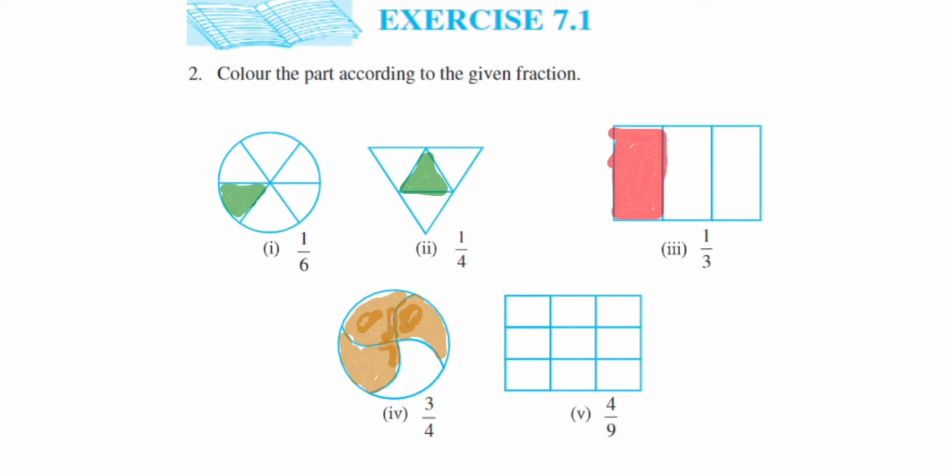Okay, the next one, last one: 4 upon 9. So 9 parts are there, you can just count how many parts are given for all. Out of this 9 parts you have to color only 4, so you can just randomly color anywhere.